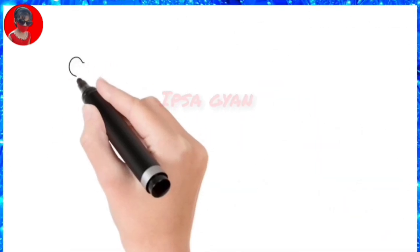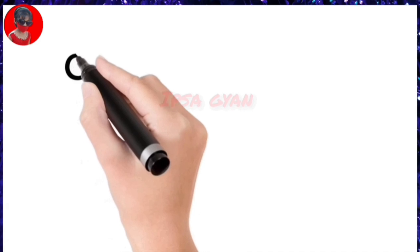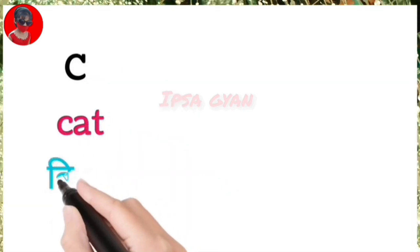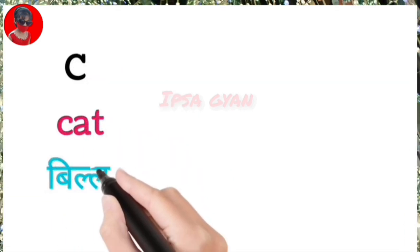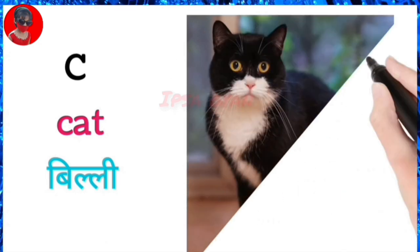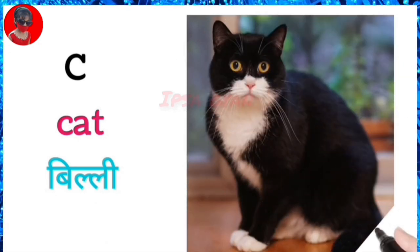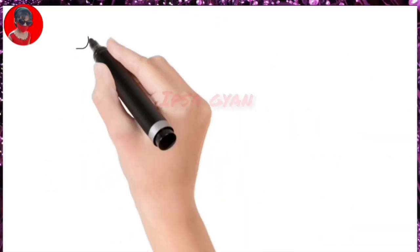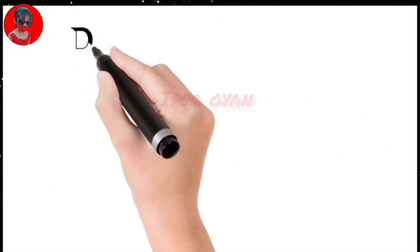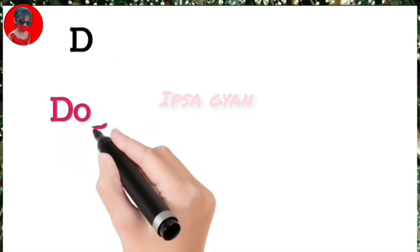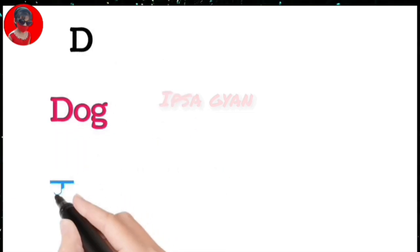C for cat, cat means billy. D for dog, dog means kutta.